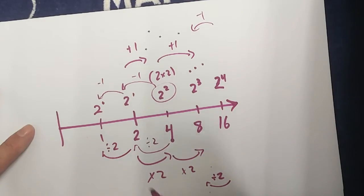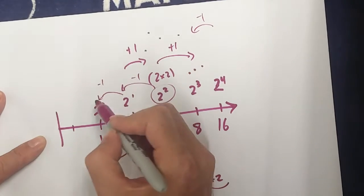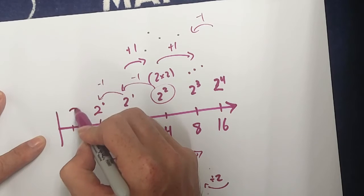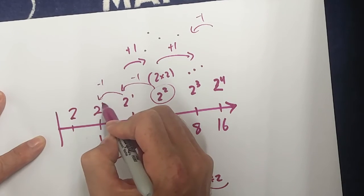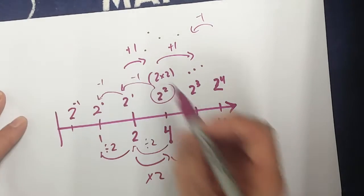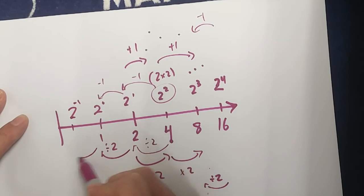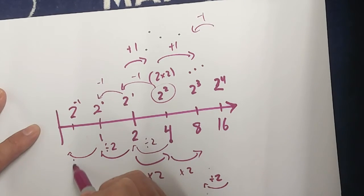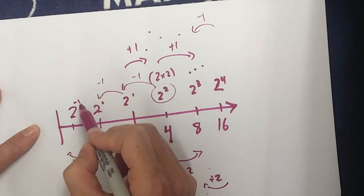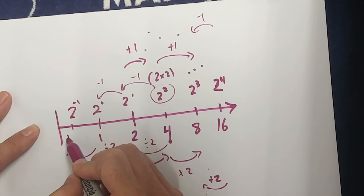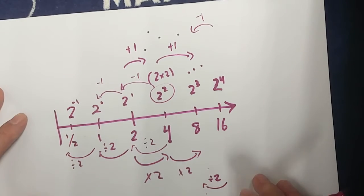And I can actually keep on doing this. If I wanted to, I could go to the negatives. If I have 2 to the power of 0 minus 1, negative 1, which means I have to take my value here, which is 1, and divide it by 2. Which would be 2 to the power of negative 1, which would be 1 divided by 2, 1 half.